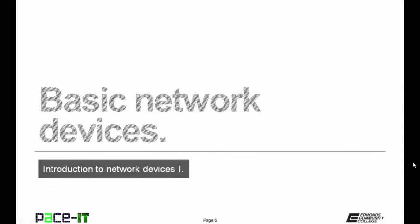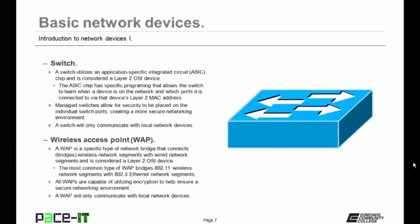Let's move on to basic network devices. A switch utilizes an application-specific integrated circuit chip, or an ASIC chip, and it is considered a Layer 2 OSI device. The ASIC chip has specific programming that allows the switch to learn when a device is on the network and which port that device is connected to via that device's Layer 2 MAC address. Managed switches allow for security to be placed on the individual switch ports, creating a more secure networking environment. One caveat with switches: a switch will only communicate with local network devices, meaning it cannot communicate with remote networks.